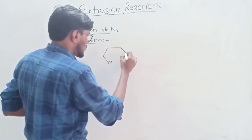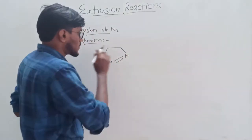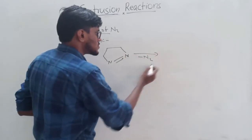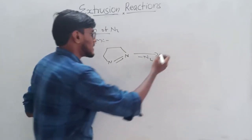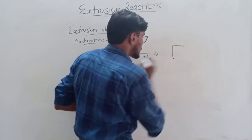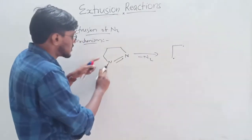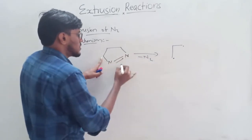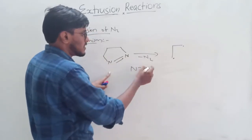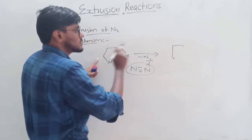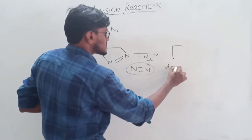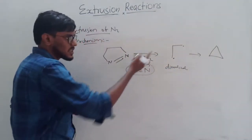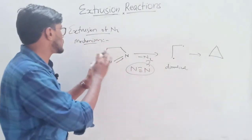Next we discuss the mechanism of nitrogen extrusion. Taking 1-pyrazoline — on the action of heat or light, it eliminates N2 and forms a diradical. This bond cleaves homolytically and this bond cleaves homolytically, forming a triple bond between the two nitrogen atoms, which is eliminated as N2. The resulting diradical then cyclizes to form the product cyclopropene.